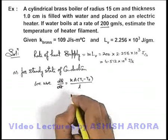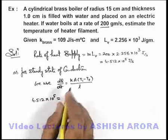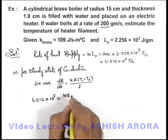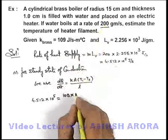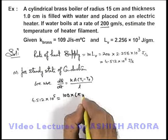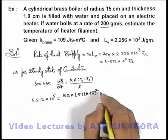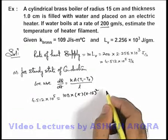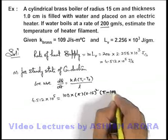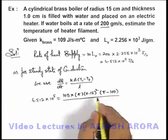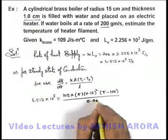Now in this situation if we substitute the values, dQ/dt we can take as 4.512 × 10⁵ equals k as 109 multiplied by cross sectional area. It is given that the radius is 15 centimeter so area will be πr². So it can be written as π × (0.15)². Temperature difference: as water is boiling, water temperature can be taken as 100. So if filament temperature we take as T, it'll be T minus 100, divided by the length of medium. Here it is given to be 1 centimeter thick, so we can write 0.01 meter.